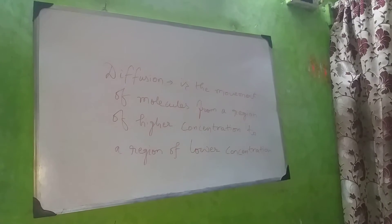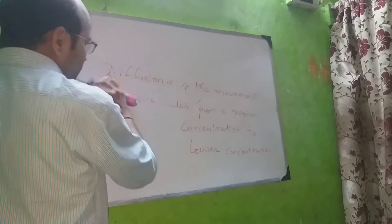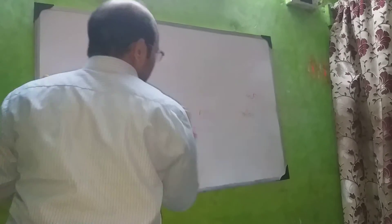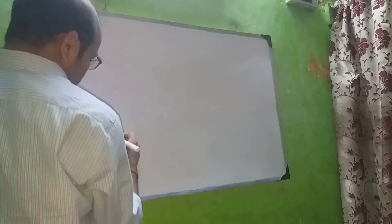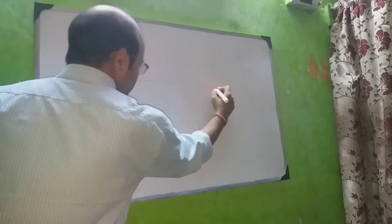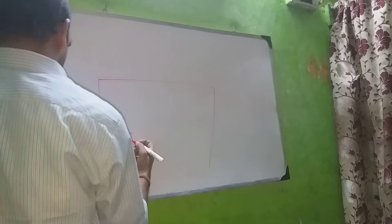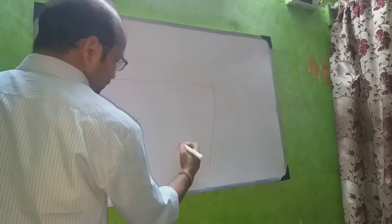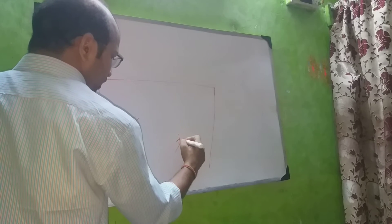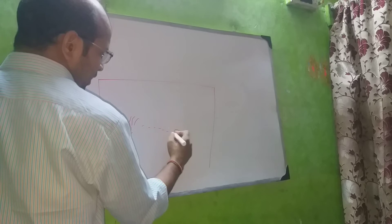Now I am going to give you an example of diffusion. An example of diffusion is: suppose we are burning incense sticks — the unit is called dhukkati. So suppose this is a room and we have burned dhukkati, or incense sticks, over here. After some time, even if you are standing over there, you can smell this.